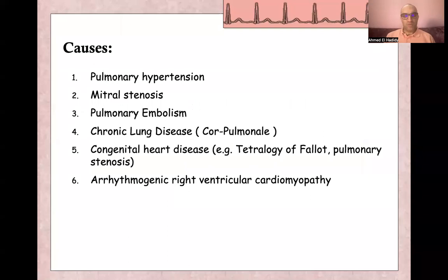Many causes can cause right ventricular hypertrophy, like pulmonary hypertension, mitral stenosis, pulmonary embolism, chronic lung disease, and cor pulmonale, congenital heart disease like tetralogy of Fallot or pulmonary stenosis.